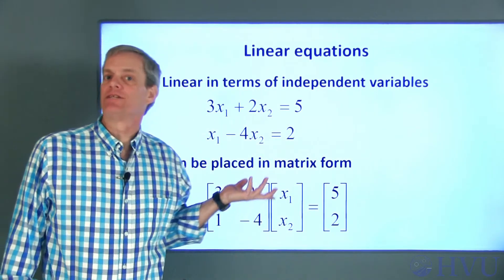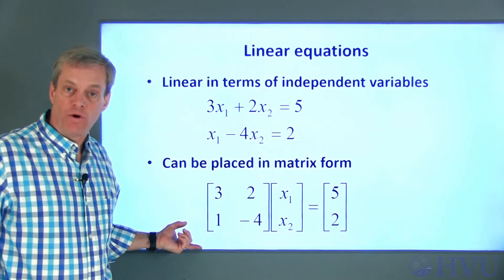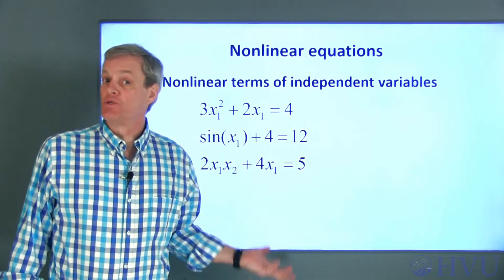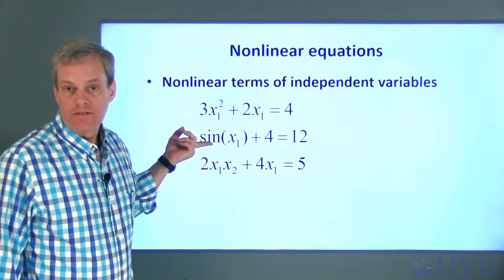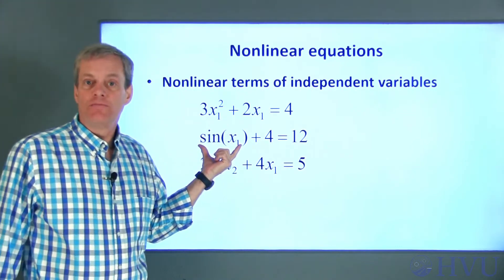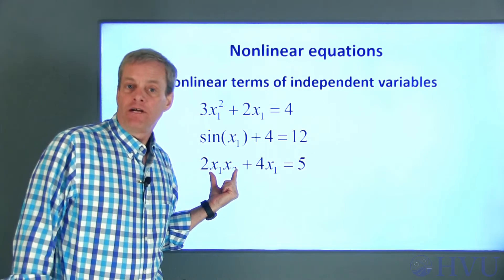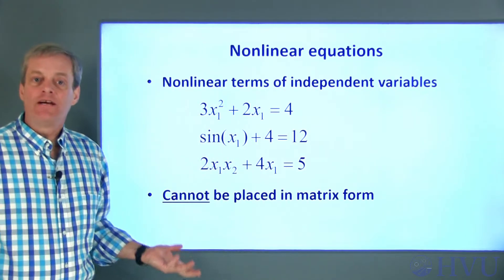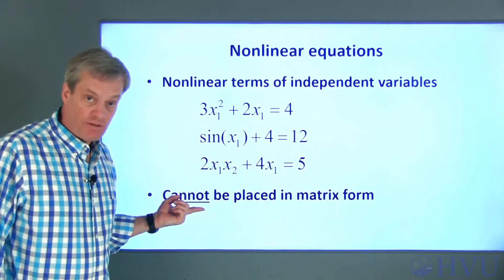Linear equations represent straight lines, and they can be written in matrix form. By contrast, nonlinear equations do not represent straight lines. All of these are nonlinear equations. The squared term here is nonlinear, this sine term is nonlinear, and this product of independent variables makes this equation nonlinear. One side effect of these nonlinearities is that these equations cannot be placed in matrix form.